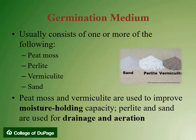Vermiculite is a very lightweight material that encompasses a large group of hydrated, laminar, magnesium, aluminum, iron silicates which resemble mica. It is neutral, has a pH of 7, and has a very high water-holding capacity. Sand — specifically construction-grade sand — is the best type because it is more porous, allowing better aeration and drainage. Sand particles do not hold plant nutrients as strongly as soil or peat moss. Sand is seldom used now; perlite and vermiculite are used instead.